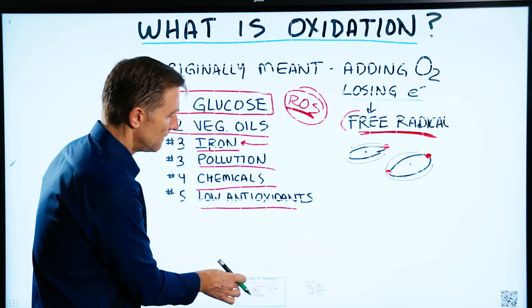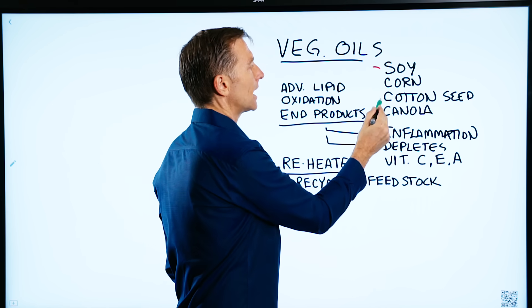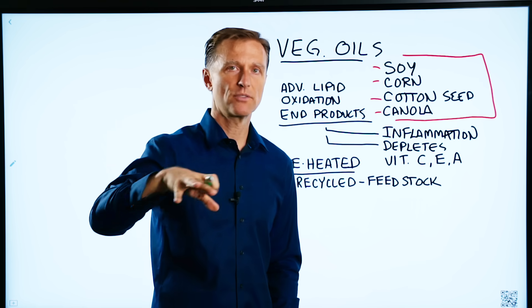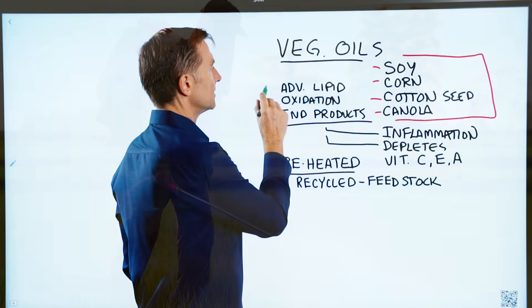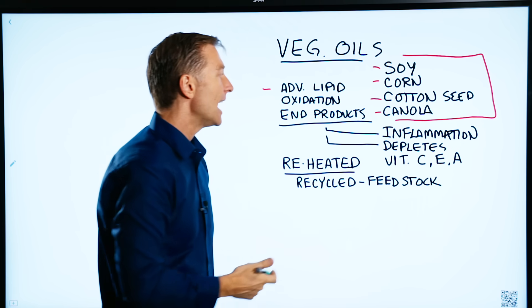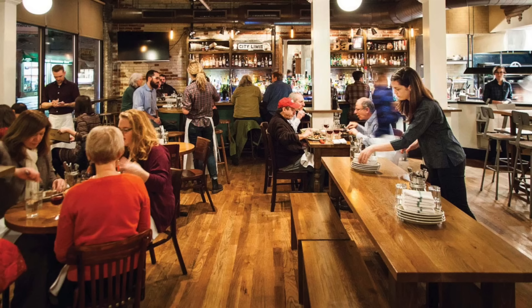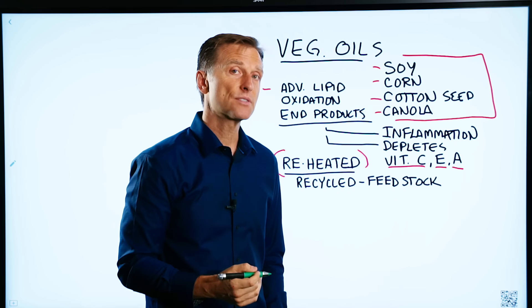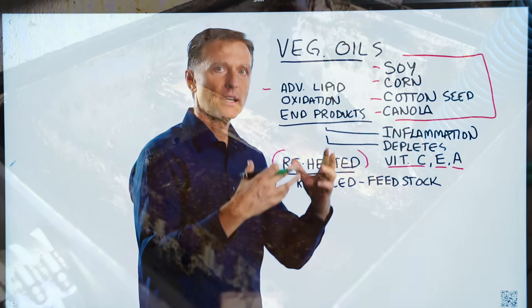Vegetable oil is really seed oil — mostly GMO. We're talking about soy, corn, cottonseed, and canola — the four GMO vegetable oils you see in the grocery store in so many products. Highly processed, with trace amounts of glyphosate, which is an herbicide. It creates advanced lipid oxidation end products, more free radicals, and inflammation in the body, while depleting antioxidants like vitamin C, vitamin E, and vitamin A. When people go to restaurants, these oils are reheated over and over — sometimes reused for a week or two — ending up as dark, highly processed, highly oxidized grease.